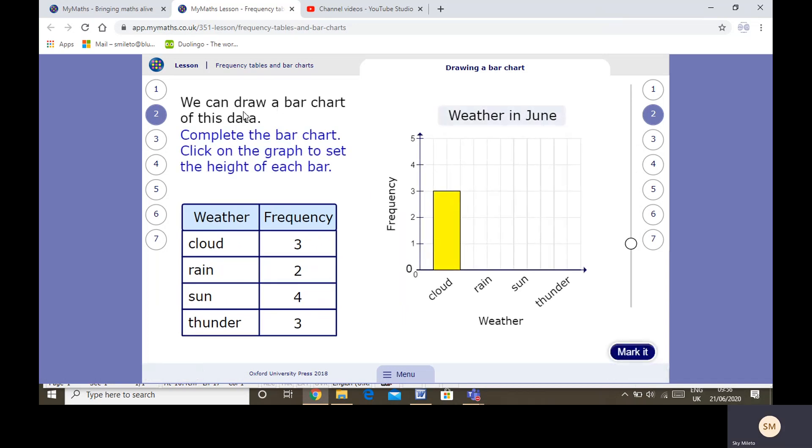So we can draw this as a bar chart for the data. We did similar thing yesterday. They weren't called bar charts yesterday but they were very similar. We have the frequency, the numbers up the side and we have the weather along the bottom.